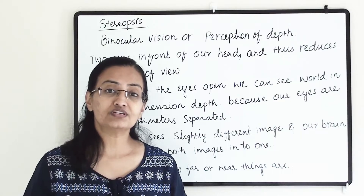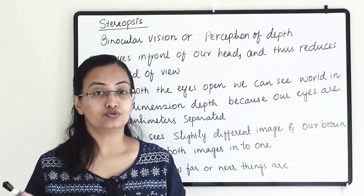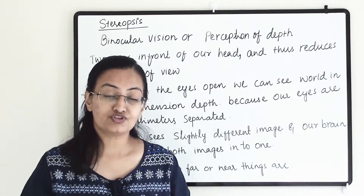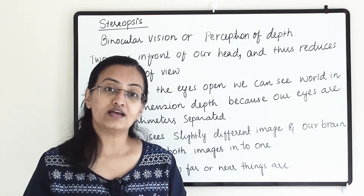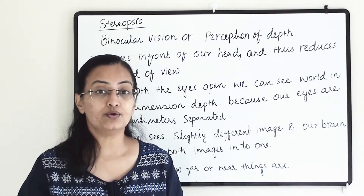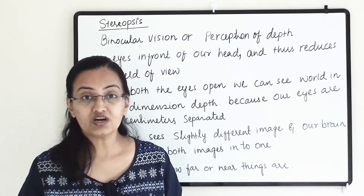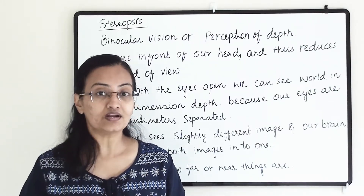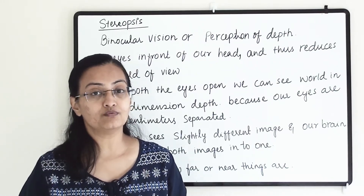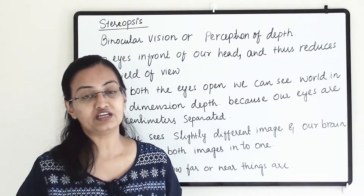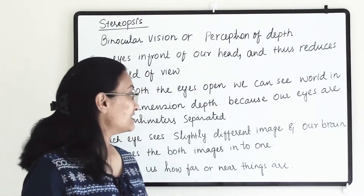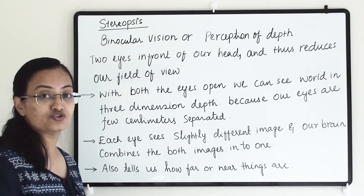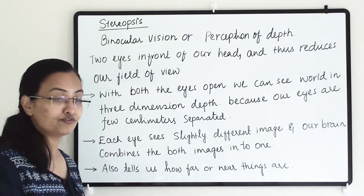Our vision is more limited compared to those animals, but with both eyes situated at the front of our head, we can see a 180-degree field of view. With one eye shut, we are able to see a 150-degree field of view.